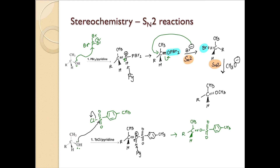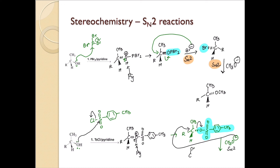So now you have created your sulfonate ester. In the next step, you react it with CH3O⁻, which is your nucleophile. This nucleophile comes in from a direction opposite to the leaving group. The tosylate ion is the leaving group — it gets kicked off. This is your SN2 reaction, and the product has CH3O attached with inverted configuration.